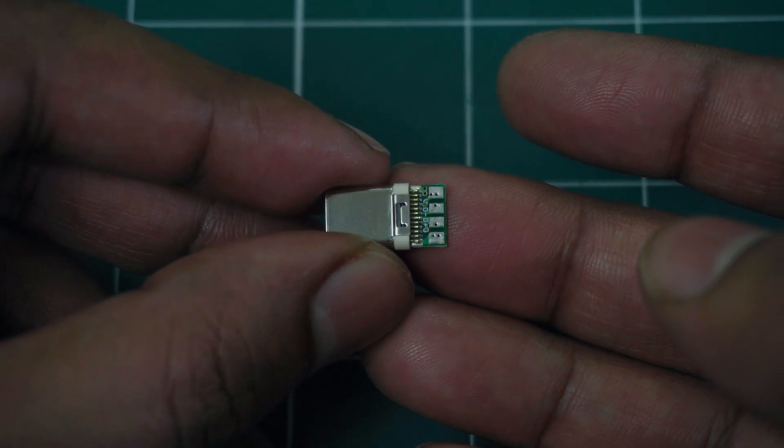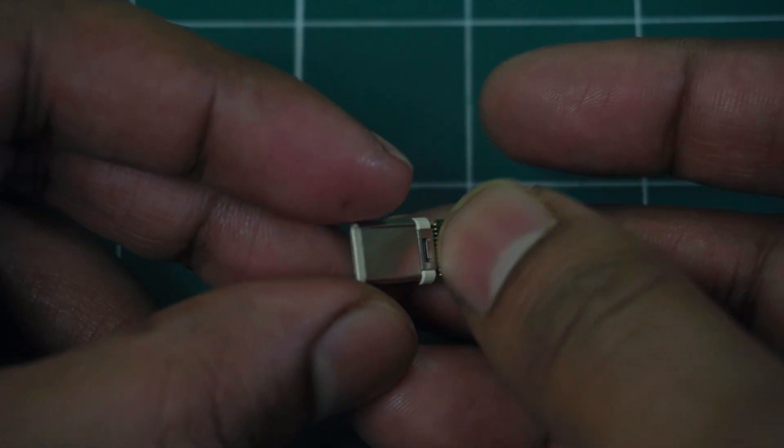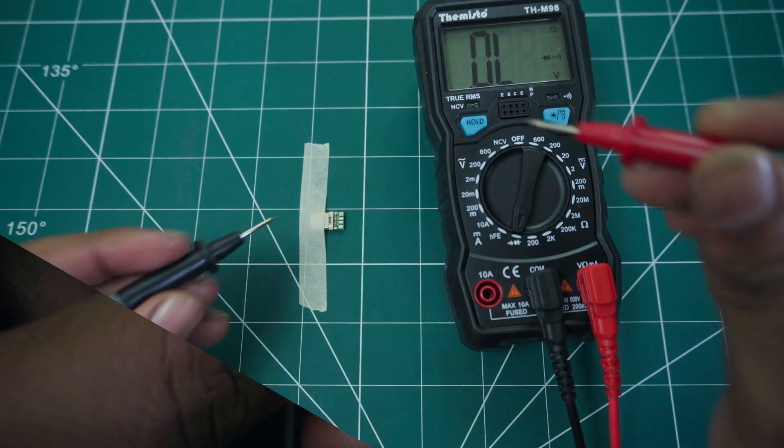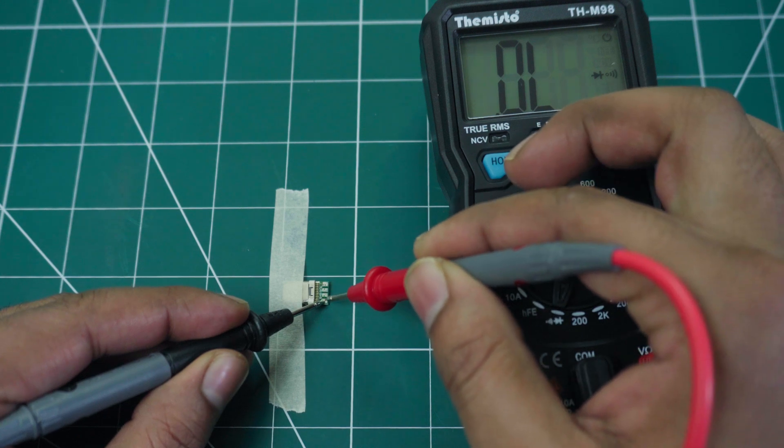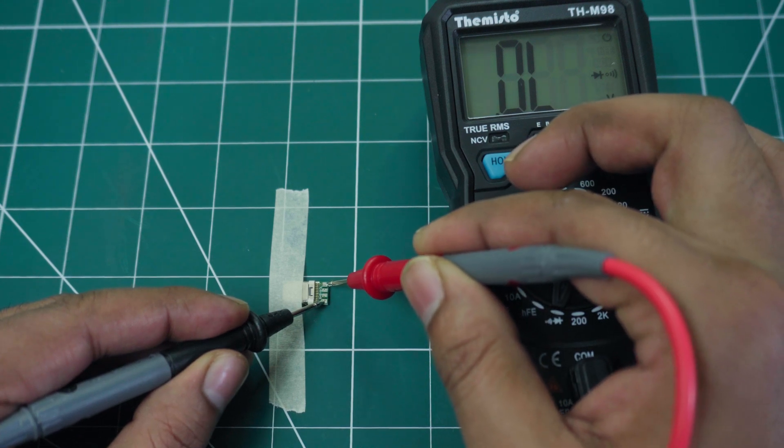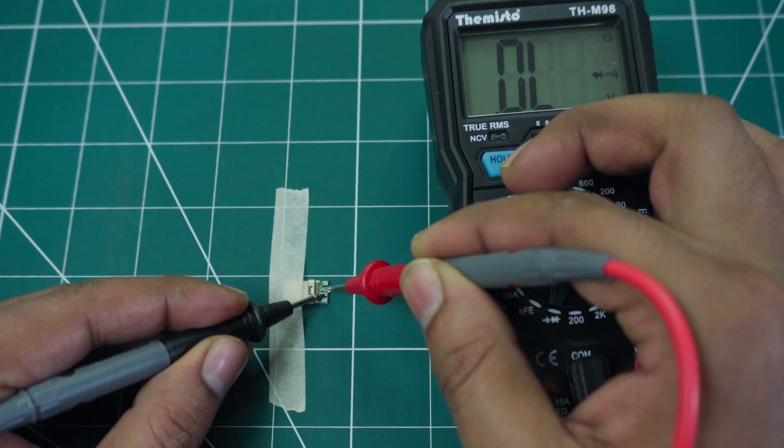Perform a continuity test on the USB-C connector to check for any internal short circuits. Place one probe on any pin of the USB-C connector, and check for continuity. If there is no continuity, then there is no short circuit.